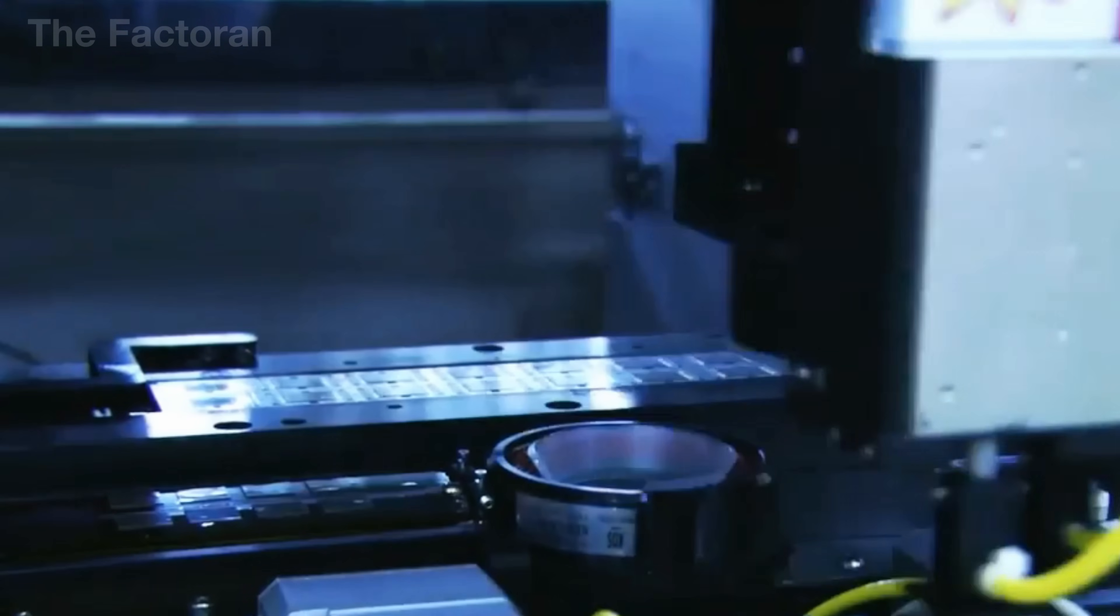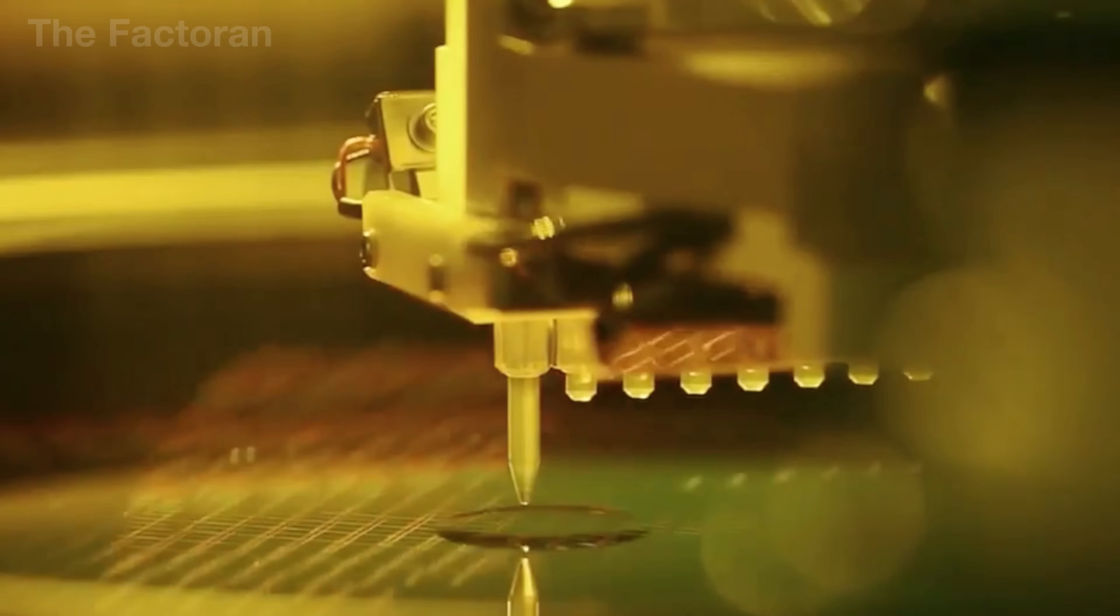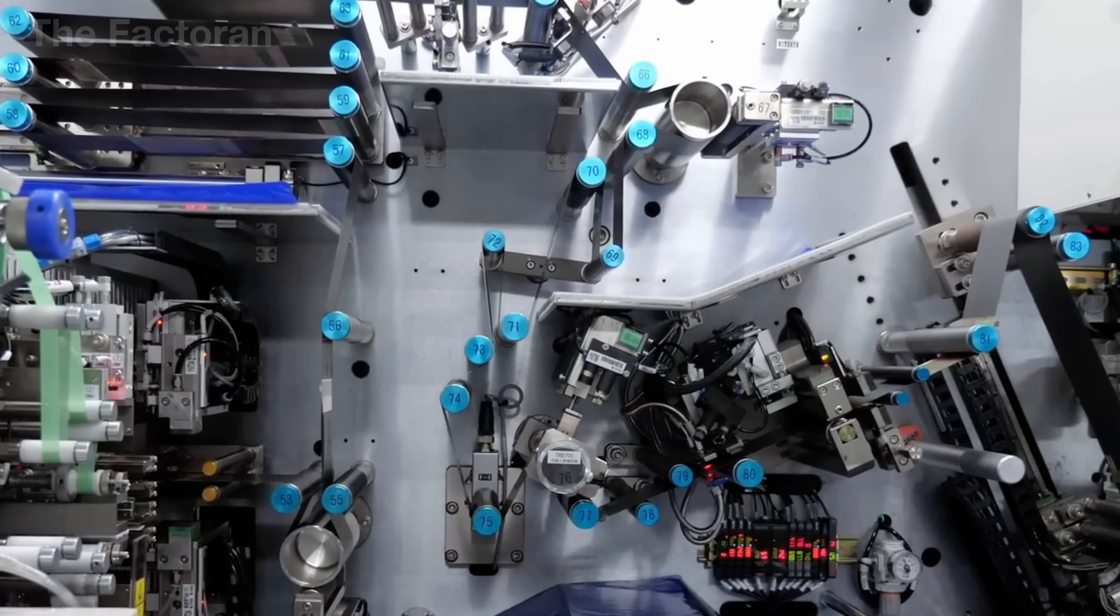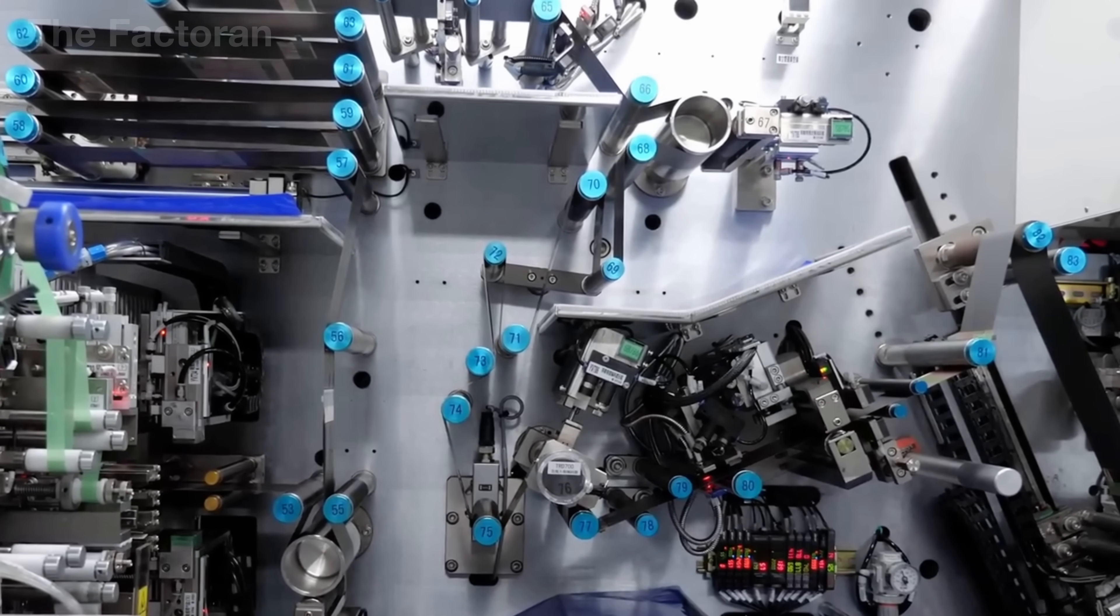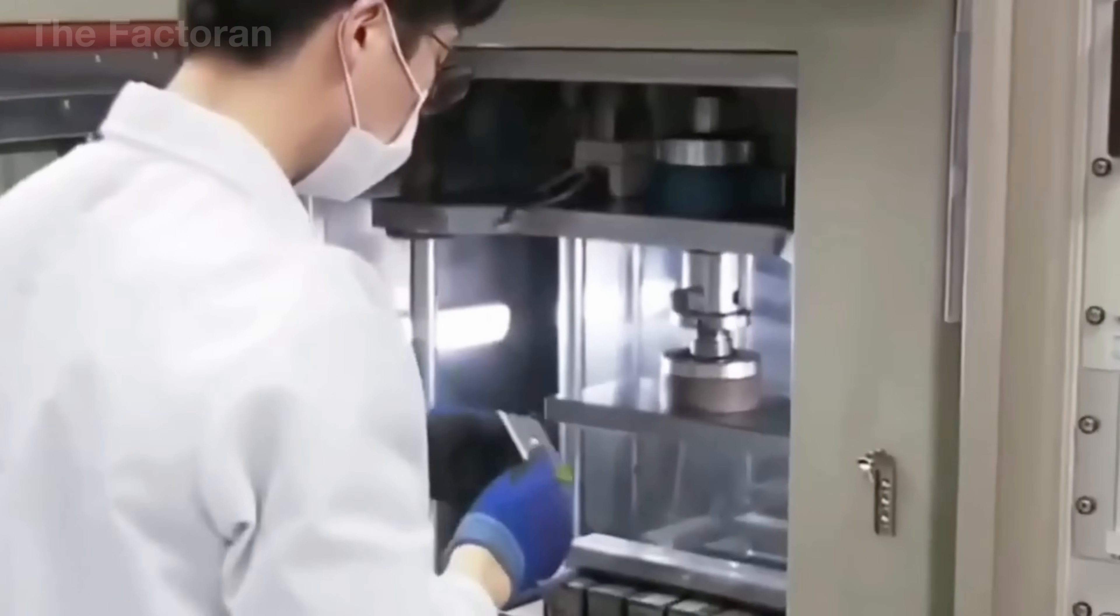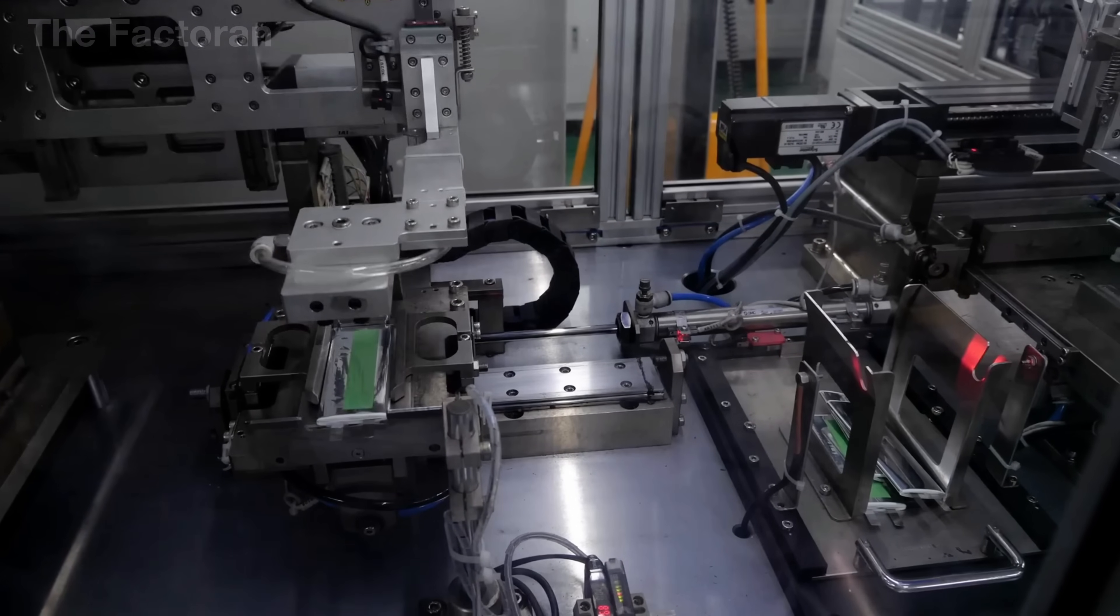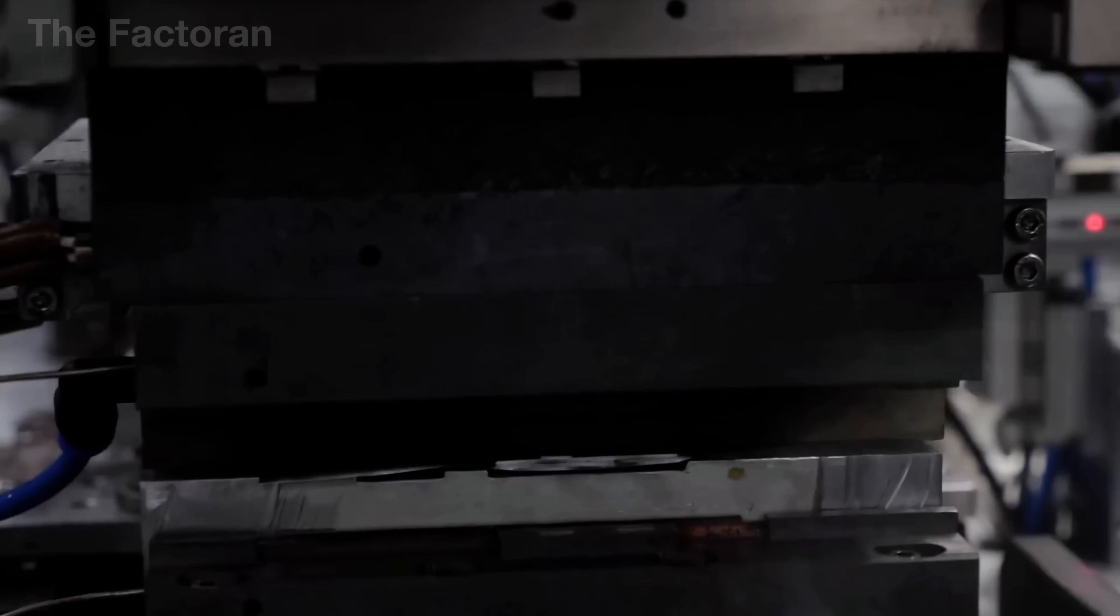During the battery pressing stage, the plates, already filled with electrolyte solution, are placed on a heated platform. A hydraulic press descends with pressure calibrated to the newton, distributing the electrolyte evenly and compressing the electrode layers. Even a small deviation can cause the battery to swell, degrade prematurely, or explode.